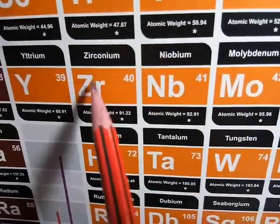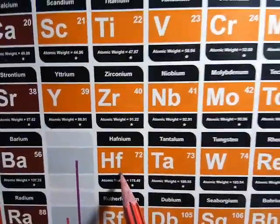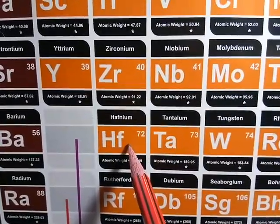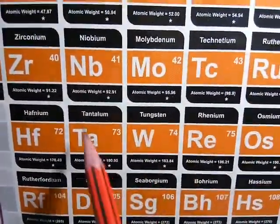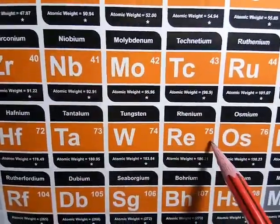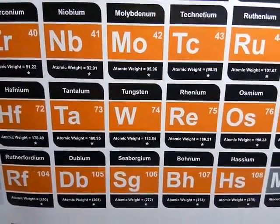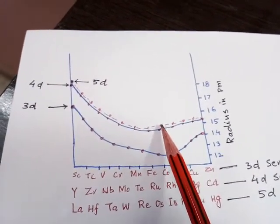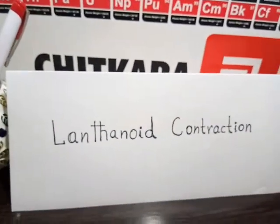The atomic radii of the 5d series and 4d series almost coincide, even though there is an additional shell in the 5d series. In the periodic table, you can see zirconium and hafnium — zirconium is present in the 4d series and hafnium is in the 5d series — but the atomic radii of zirconium and hafnium is nearly the same. That is the case with almost all these elements; the 4d and 5d series elements have nearly equal atomic radii, and to explain this phenomenon we use the term lanthanoid contraction.